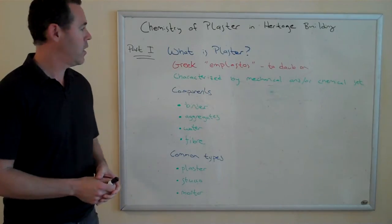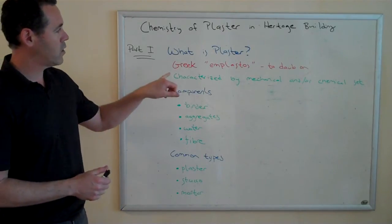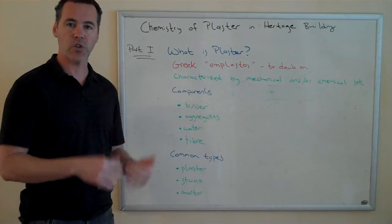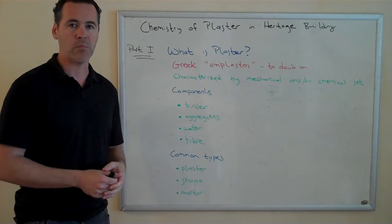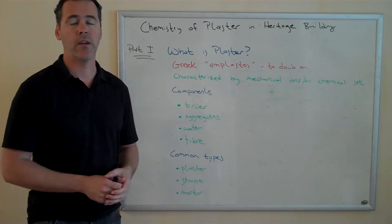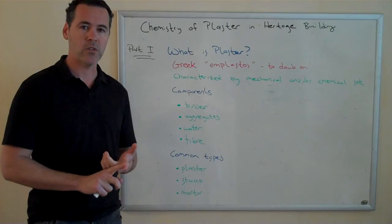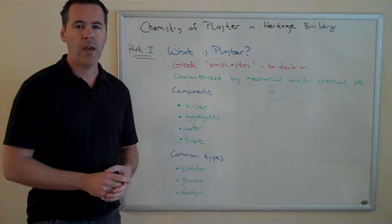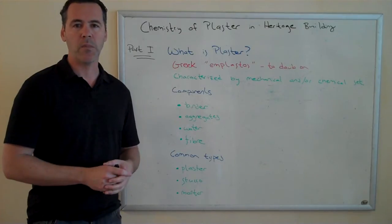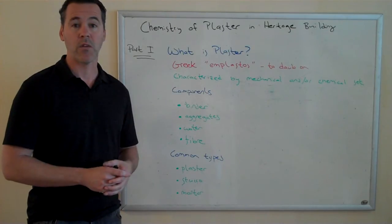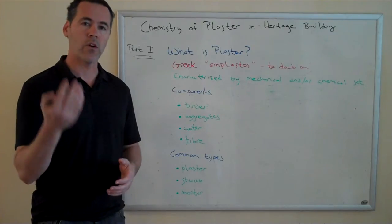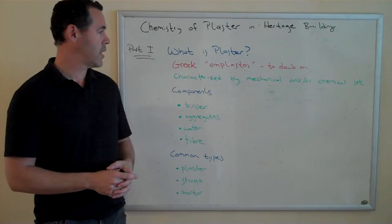What is plaster? The Greeks used the word emplastos, meaning 'to daub on,' and that's where we get our English word for plaster and plastering. But plaster has a much longer history. We know that the Egyptians were using plaster some 4,000 years ago, and in the area that is now modern-day Turkey, people were using plaster some 13,000 years ago. No doubt the history of plaster goes much further, from the dawn of civilization.